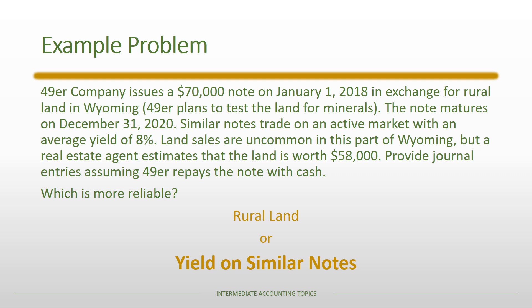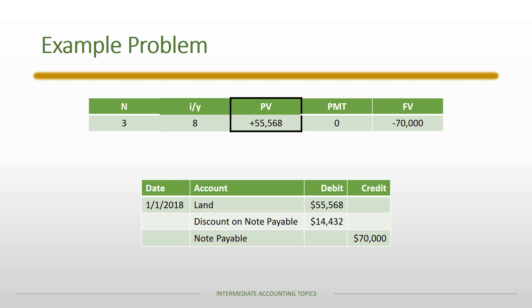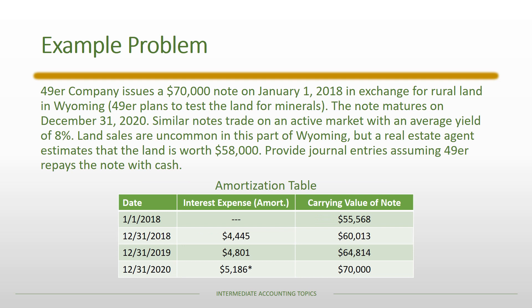Since a Level 2 fair value is more reliable than a Level 3, we choose the yield on similar notes. The challenge here is that we don't directly have a present value — we only have a discount rate — so we use TVM to arrive at the present value. N = 3 (three-year note), yield = 8%, no payments, face value = $70,000. Solving gives a present value of $55,568. In the initial journal entry, we assign that present value to the land. The note payable has a face value of $70,000, so the discount on note payable is $14,432, giving a net liability of $55,568.